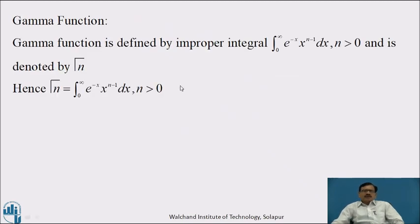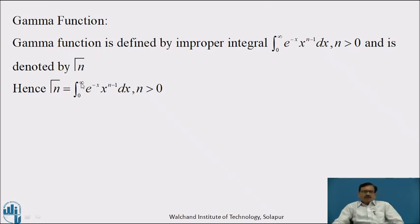First, we will see what is the Gamma Function. The Gamma Function is defined by the improper integral: integration from 0 to infinity of e raised to minus x, into x raised to n minus 1, dx, where n is greater than 0, and is denoted by Γ(n). Hence, Γ(n) = ∫₀^∞ e^(−x) · x^(n−1) dx, where n > 0. It is a special kind of definite integral.